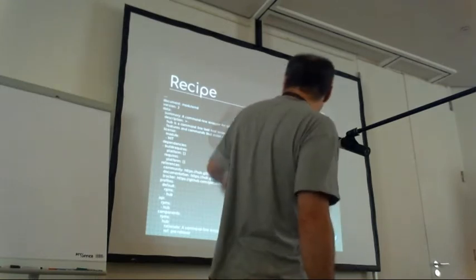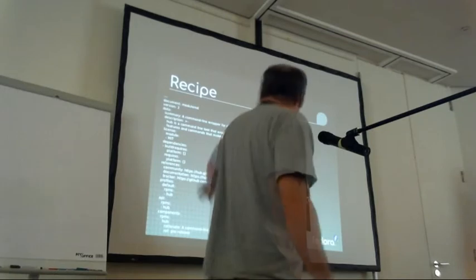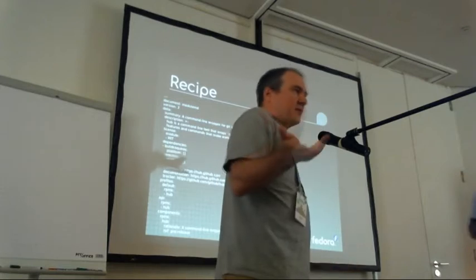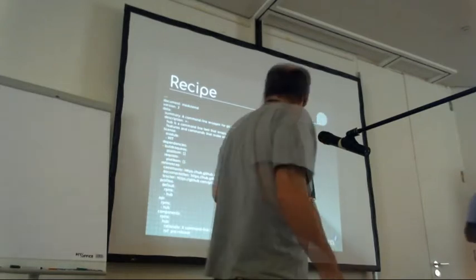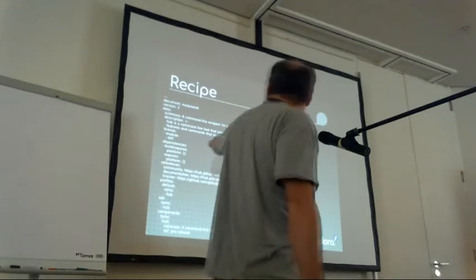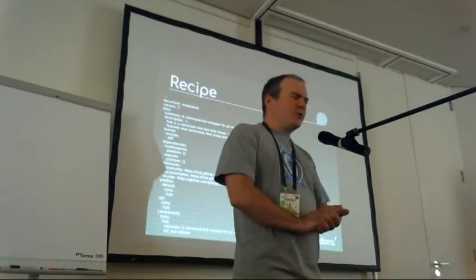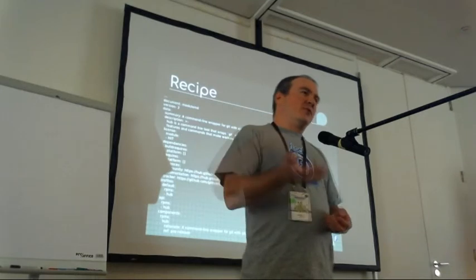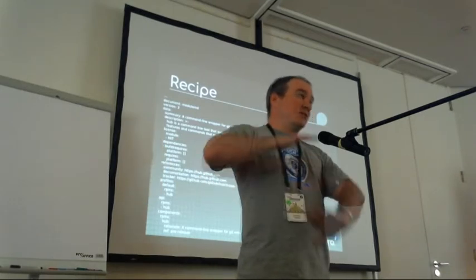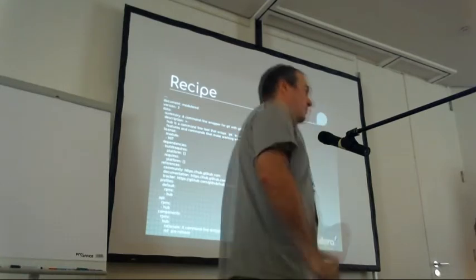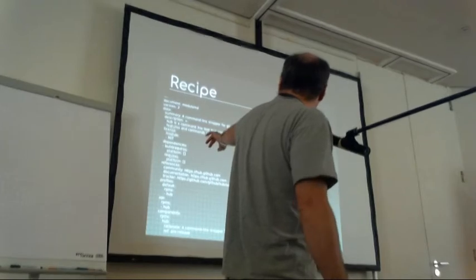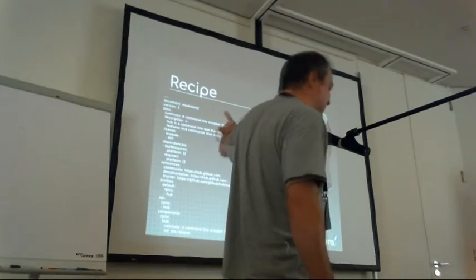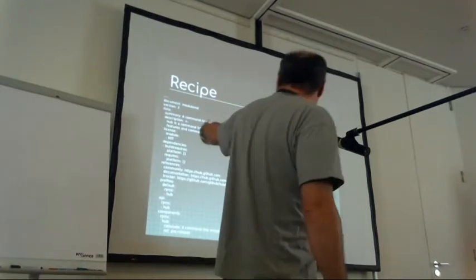Aside from the header information, which just says this is a modulemd document for Format 2, the mandatory entries are a summary — basically the same as an RPM spec file summary — and it's the same for a description. For the license, there are two kinds. You only need to specify what the license is for the module itself. During the module build service, this will automatically be populated with the license fields of any RPMs that are built with it as well, for compliance purposes.